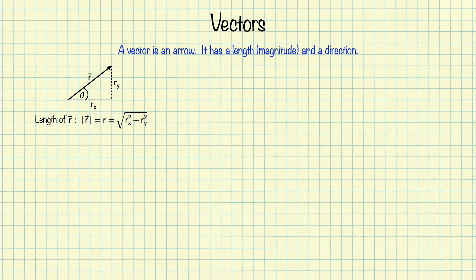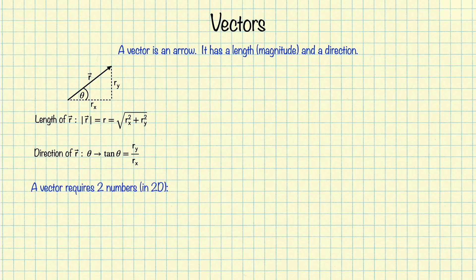Now that we have the length, what about the direction? The direction is the angle at which this vector points. Using the fact that we have a right triangle, the tangent of theta is opposite over adjacent, so that will be ry over rx. So to define a vector in two dimensions, you need two numbers. One way you might define a vector is by writing down the x and y components. We can write this vector in what is called vector notation as r vector equals rx times x hat plus ry times y hat, where x hat and y hat are what are called unit vectors.